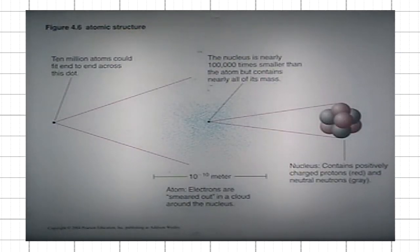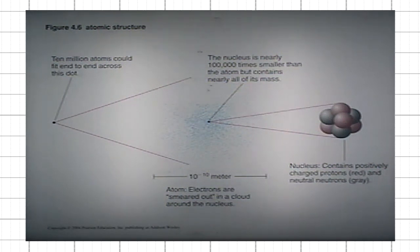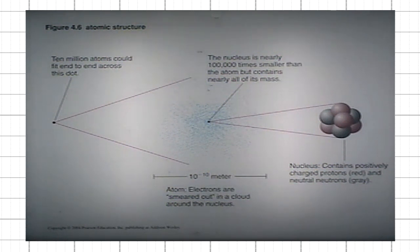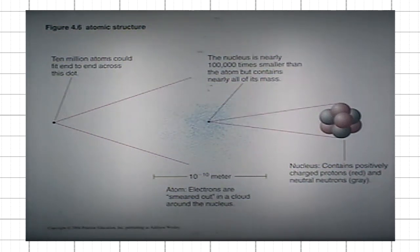All ordinary matter — like us, this projector, this table — is made out of atoms of chemical elements or molecules, which are a combination of different atoms, sometimes the same, held together by electrical forces.